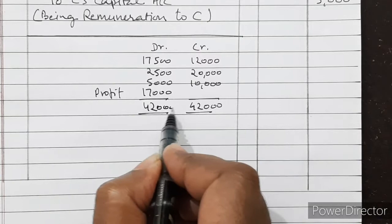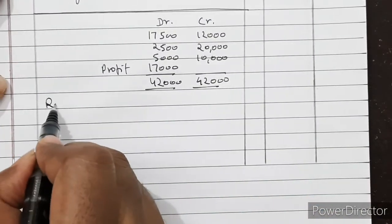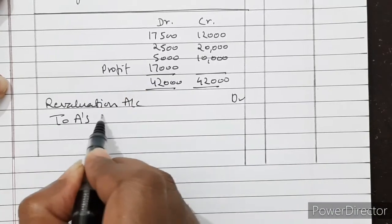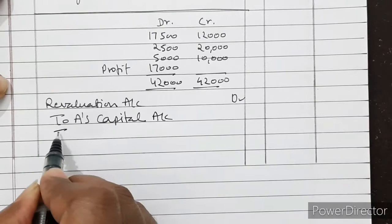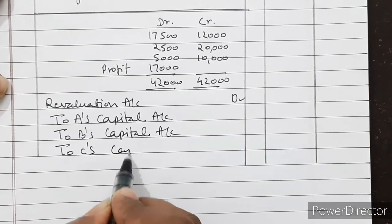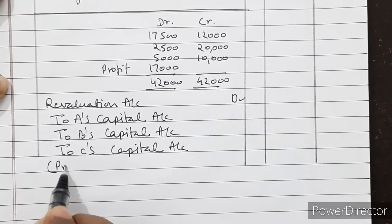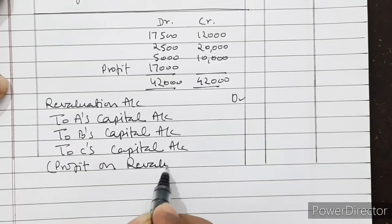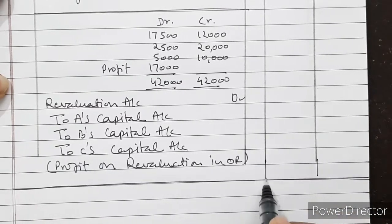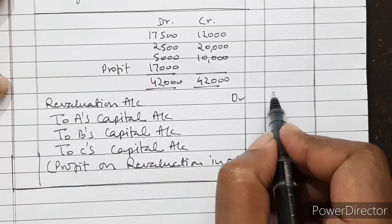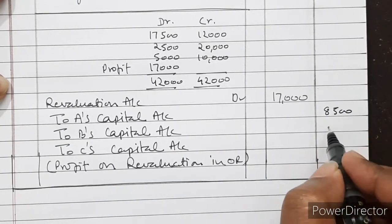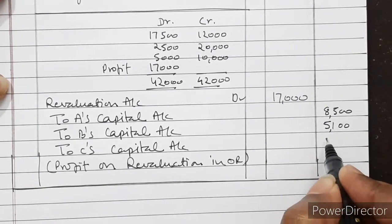Journal entry for profit on revaluation: Revaluation Account debited to A's, B's, and C's Capital Accounts in old ratio 5:3:2. Rs. 17,000 is distributed as: A gets Rs. 8,500, B gets Rs. 5,100, and C gets Rs. 3,400.